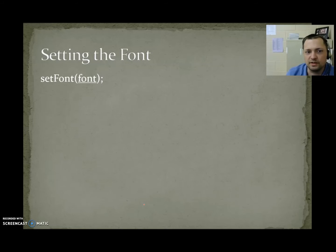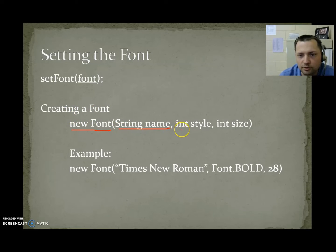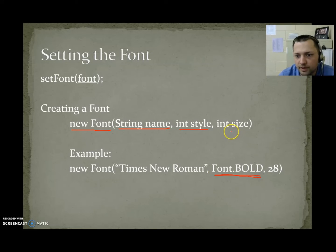setFont is used to set the font you want to use. To create a custom font: new Font(name, style, size) — for example, the font name could be Times New Roman. Styles are listed in the Font class; Font.BOLD is one option, Font.PLAIN gives the basic look. The int size is the point size of the font — for example, point size 28 would be a relatively large font.